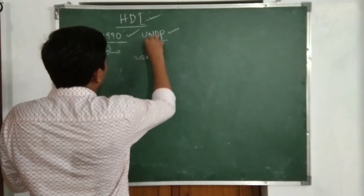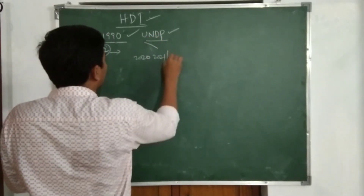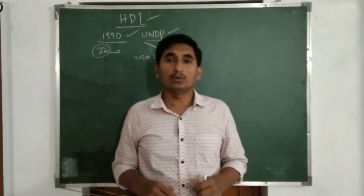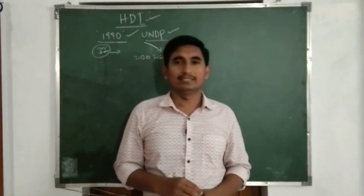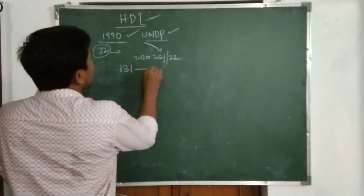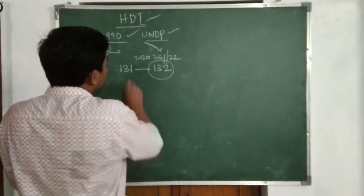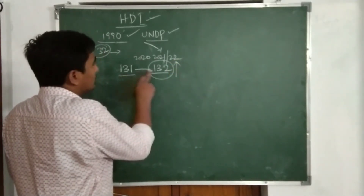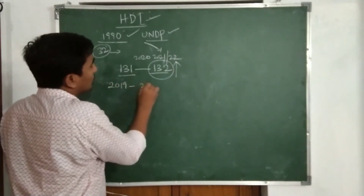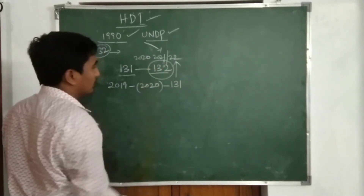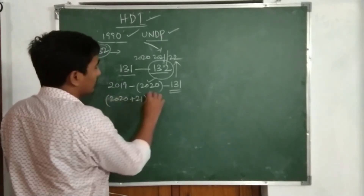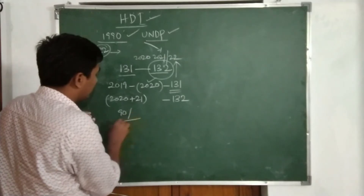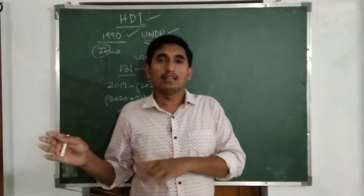In 2020, the report was published by the UNDP — the United Nations Development Programme. India's previous rank was 131, and the current ESR Index rank is 132. It slipped just one place. The data includes 132 types of data records. Many countries have seen a fall in the HDI report.